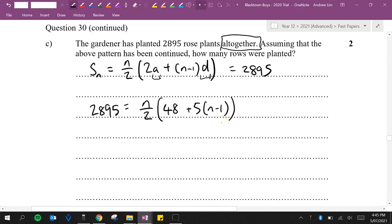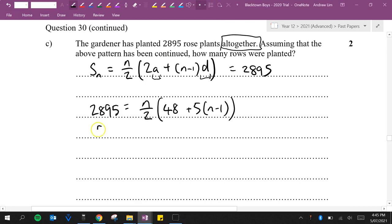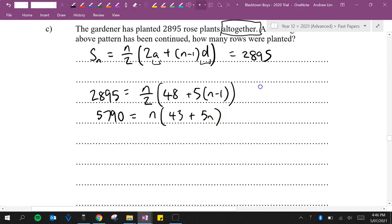Okay, so I'm just going to multiply both sides by 2. 5,790 is equal to N bracket 48 plus, I'm just going to expand this out, 5N minus 5, or make that 43 plus 5N. I'm going to expand that out again. 43N plus 5N squared.